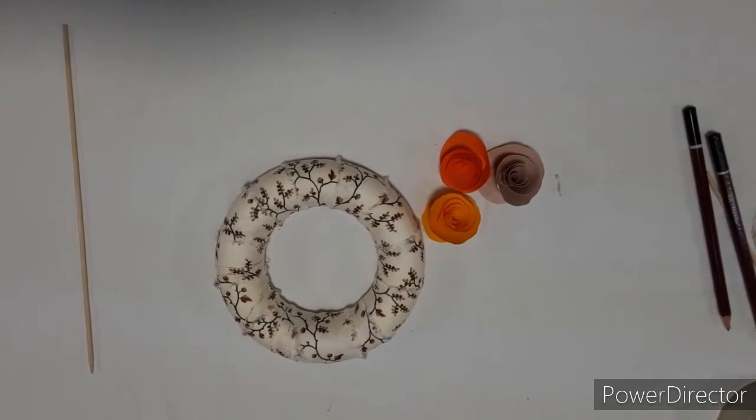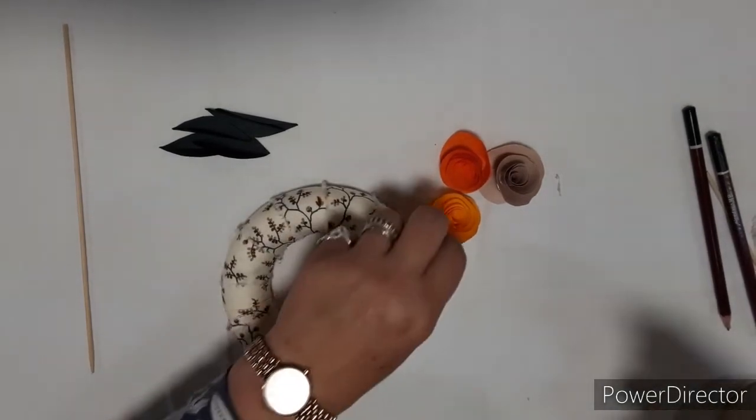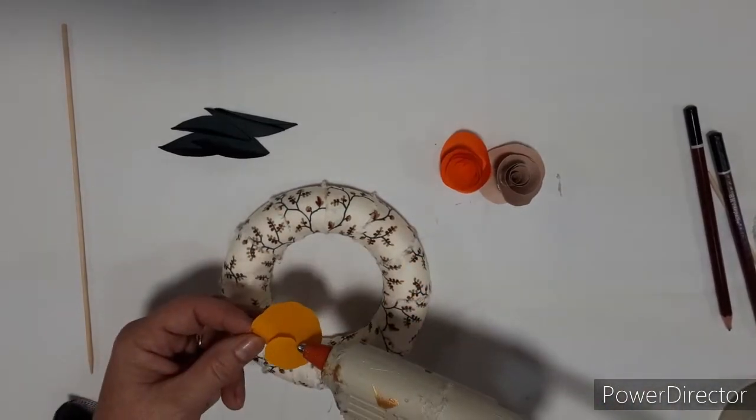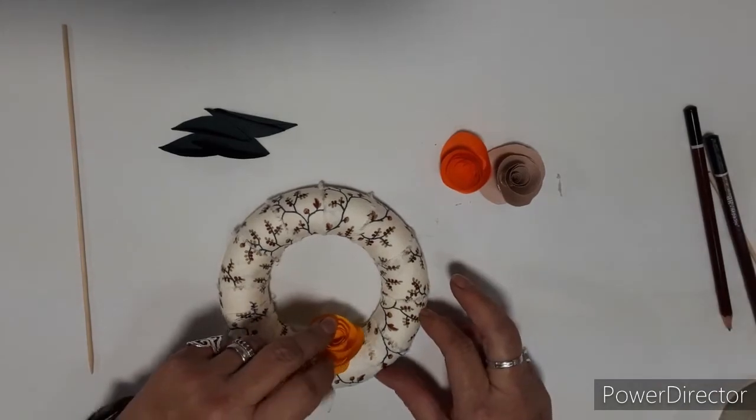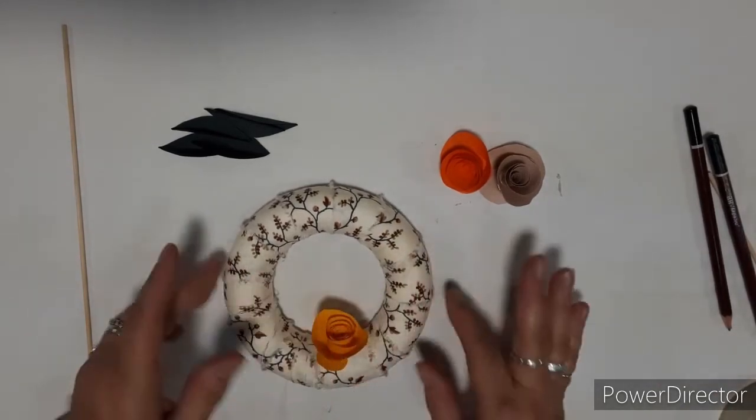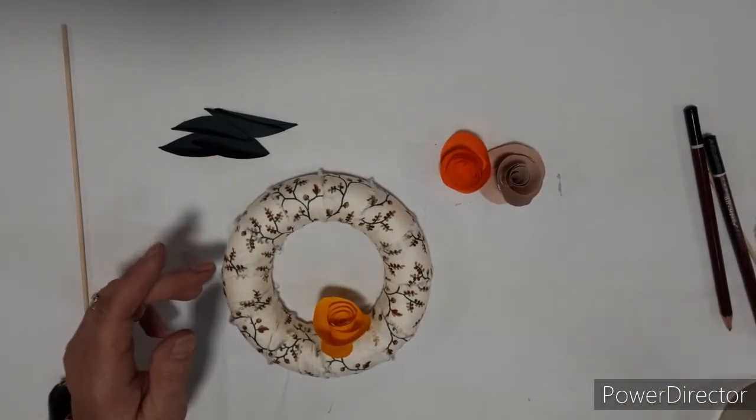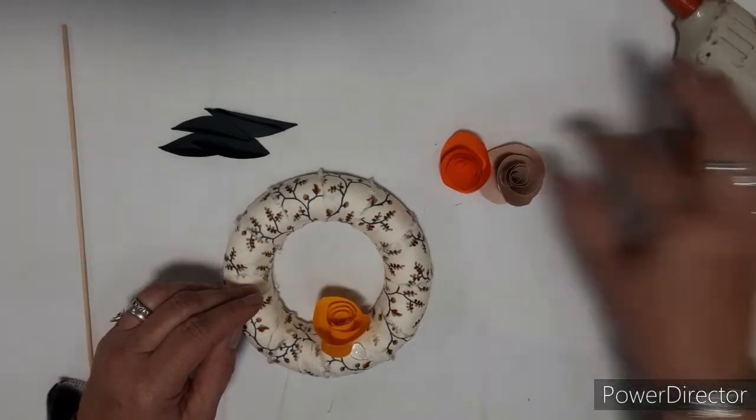Next thing we need to do is attach it all together. So take a rose and pop it in. Pop on a blob of glue and attach that somewhere on the wreath. Add a blob of glue and attach another rose.